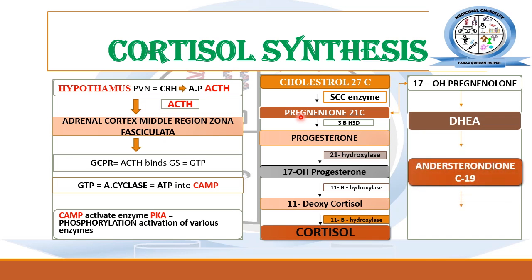Dehydroepiandrosterone (DHEA) is the precursor for the synthesis of androgenic hormones like testosterone, estrogen, and progesterone. DHEA is then converted into the 19-carbon molecule androstenedione by the enzyme 3-beta-hydroxysteroid dehydrogenase. In the next step, androstenedione is converted into testosterone by 17-beta-hydroxysteroid dehydrogenase. Testosterone can be directly converted into estrogen by the action of aromatase enzyme. This is how androgens are synthesized from pregnenolone.